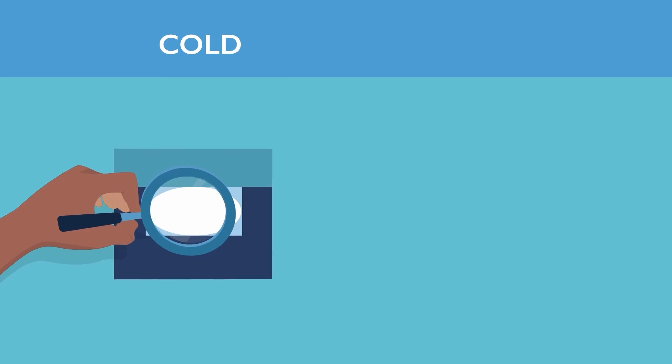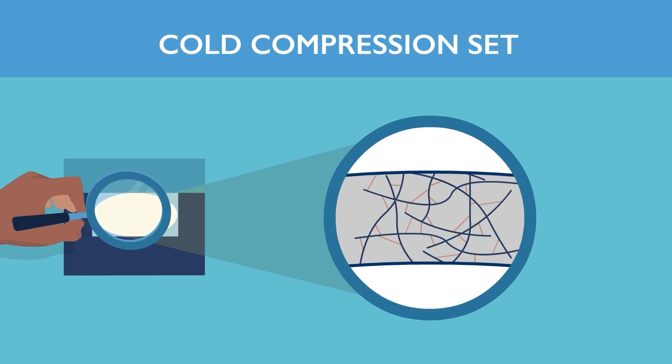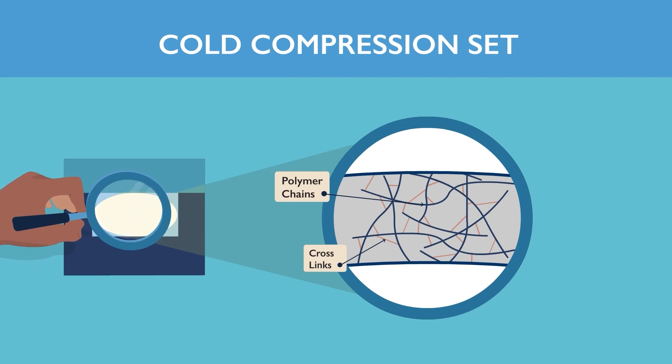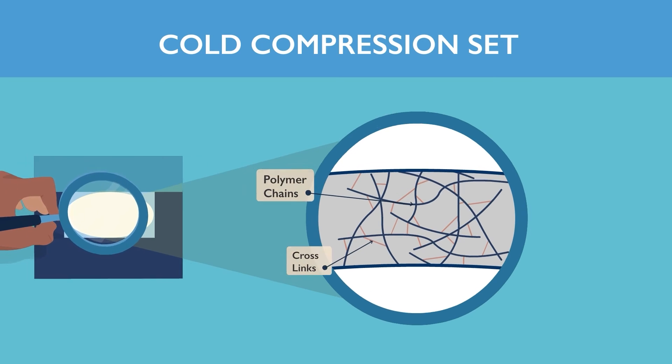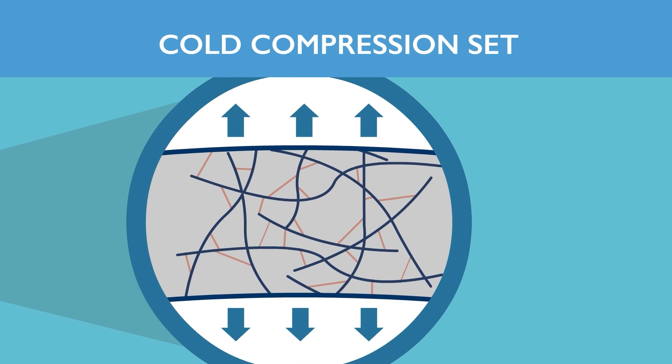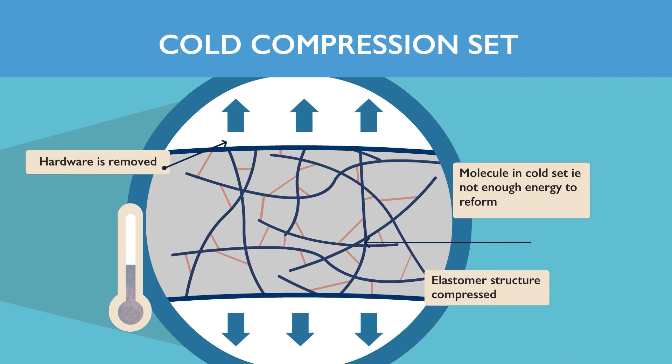There is also cold set compression set where elastomeric recovery is possible. With cold set, when the elastomer is compressed, the polymer chains and crosslinks slide and move past each other rather than breaking and reforming.